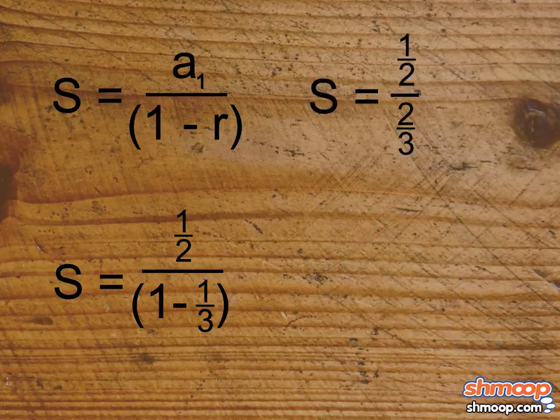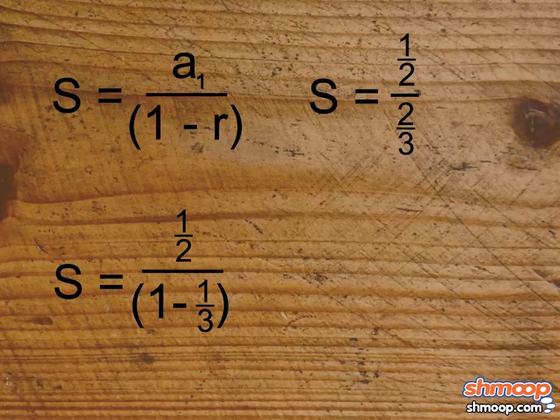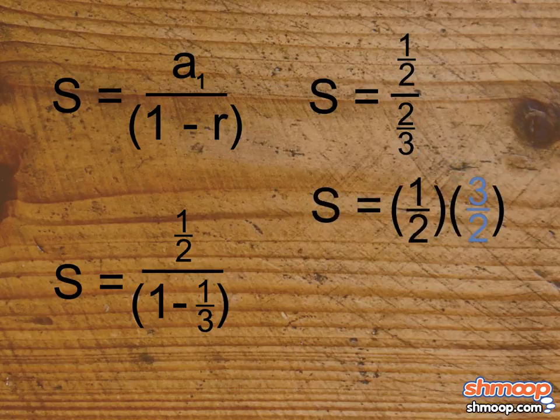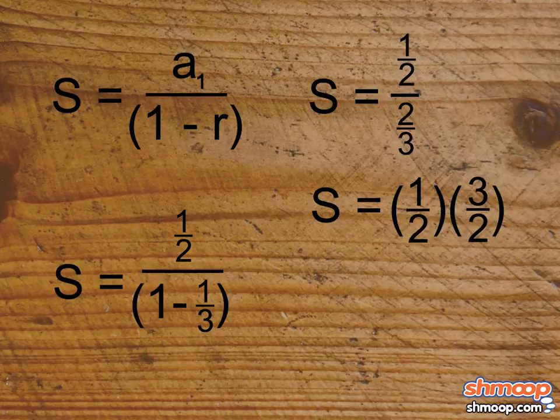So we're left with one-half divided by two-thirds. Stop a sec, be sure you understand this. Instead of dividing one-half by that nasty fraction, two-thirds, let's multiply by its reciprocal three over two to get one-half times three-halves, or three-fourths.